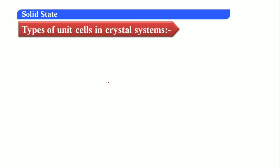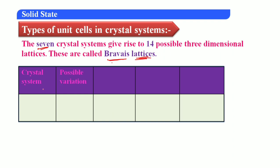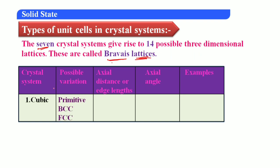Types of unit cells in crystal systems — very important, questions have been asked on this. The seven crystal systems give rise to 14 possible three-dimensional lattices called Bravais lattices. First system: cubic — primitive (SC), BCC, FCC; a = b = c; α = β = γ = 90°; examples: NaCl, copper, zinc blende. Second: tetragonal — primitive and BCC; a = b ≠ c; α = β = γ = 90°; examples: white tin, SnO₂, CaSO₄.